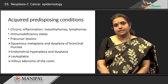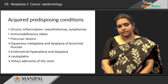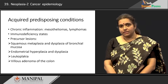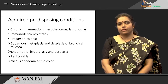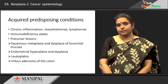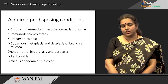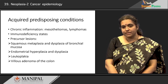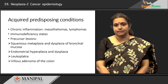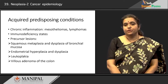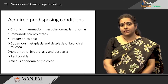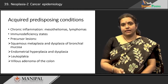Endometrial hyperplasia of the endometrial lining can undergo hyperplasia, further dysplasia, and eventually lead to cancer. Leukoplakia — a white plaque or patch in the oral cavity — if it has dysplastic changes, could lead on to cancer. Villous adenoma of the colon is also now known to be a predisposing lesion for cancer.